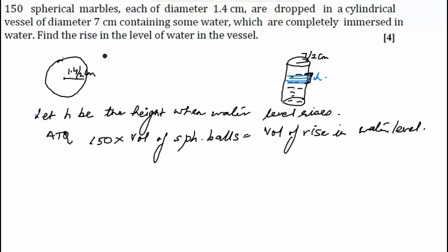I'll repeat once again: volume of 150 balls will make the water level rise to some particular level, so this rise will be equal to volume of the spherical balls dropped. This will be 150 into 4 by 3.